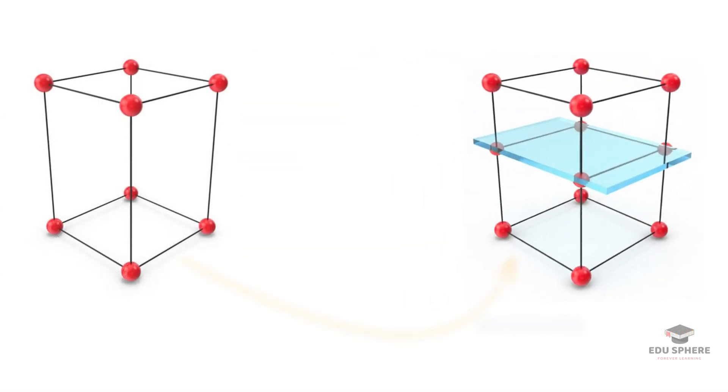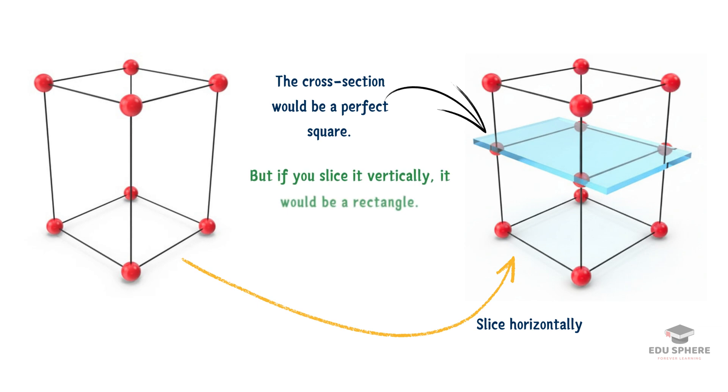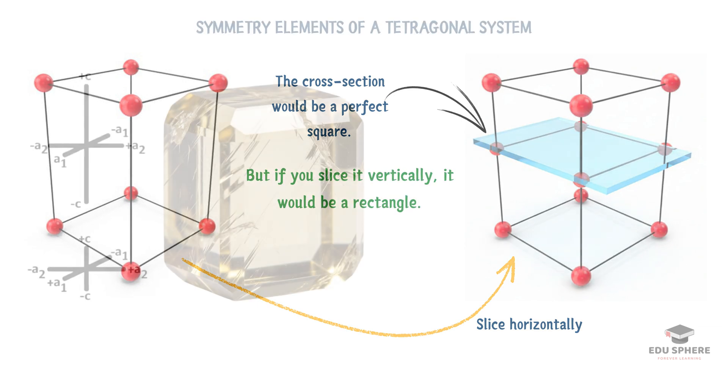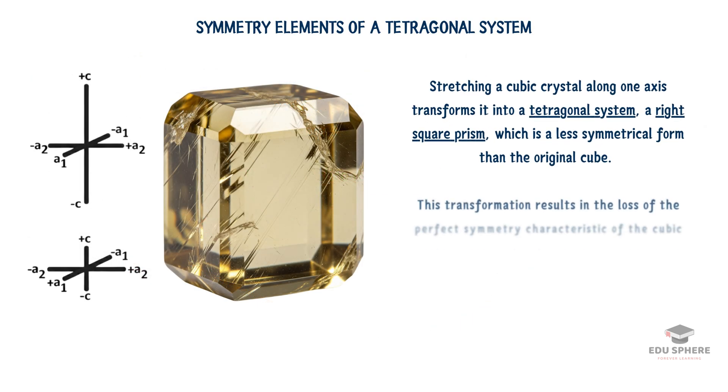If you were to slice a tetragonal crystal horizontally, the cross section would be a perfect square. But if you slice it vertically, it would be a rectangle. This gives these crystals their characteristic squarish, prismatic look.